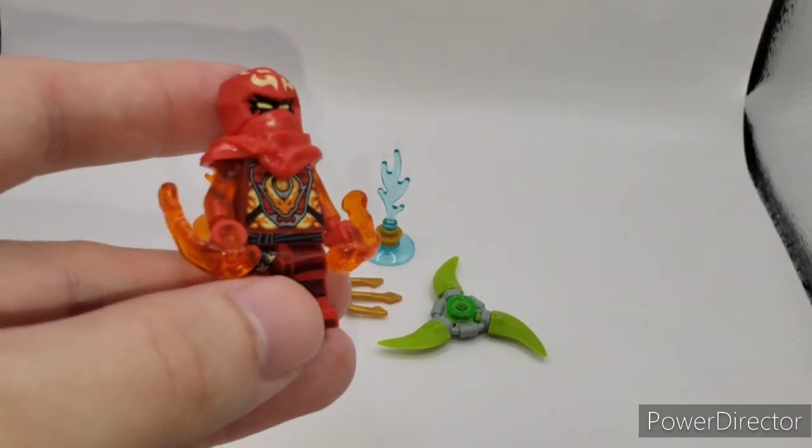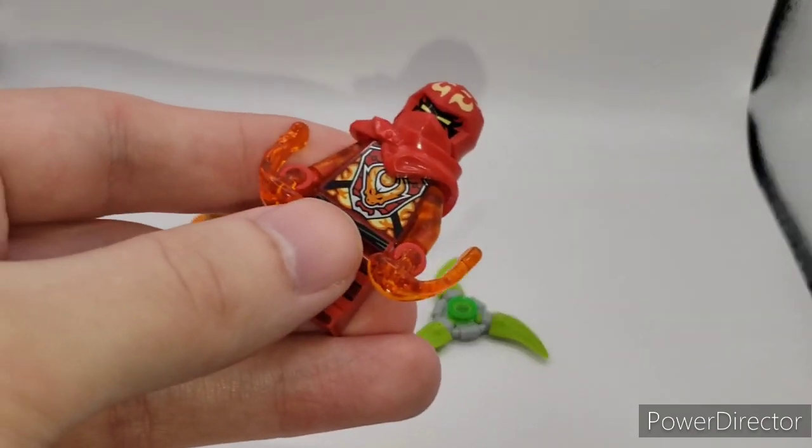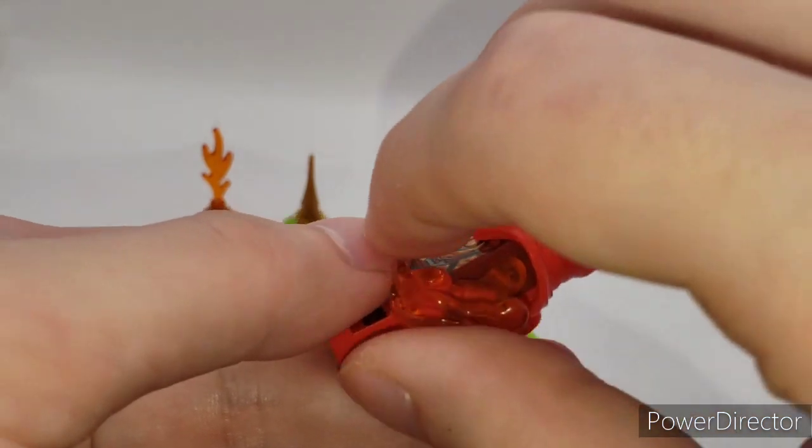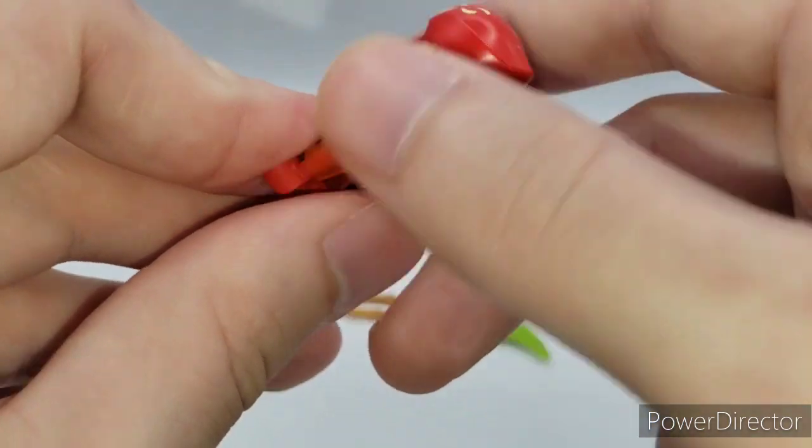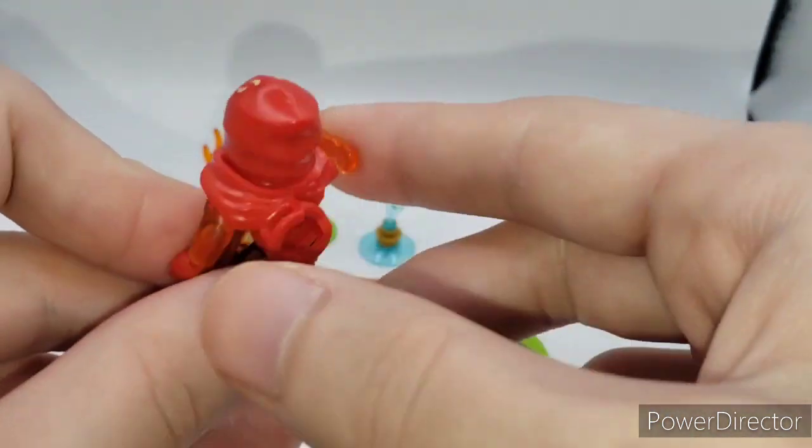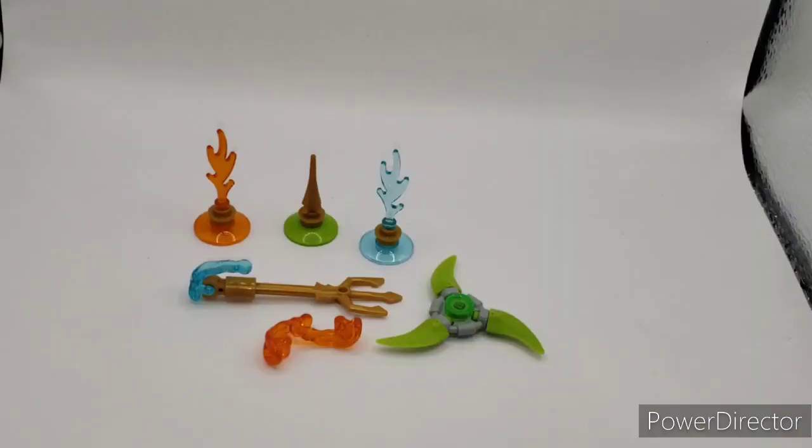I should mention that Kai comes with his energy blast pieces from Lego Superheroes, and what you can do is touch these and they'll fling off. There's one, and we have the other one which can fling off too. In a nutshell, that's all the accessories that came in the set.